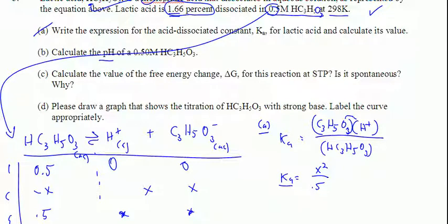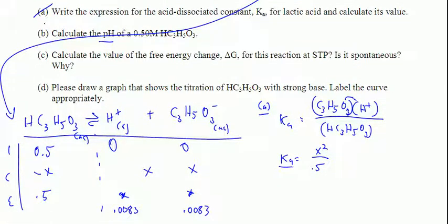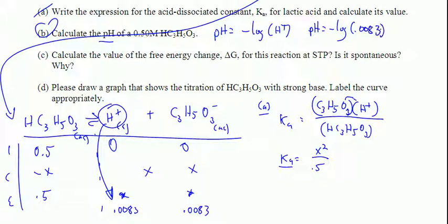Now I'm going to start the problem. Part A: Calculate the pH. pH equals negative log of H plus, therefore pH equals negative log of 0.0083 at equilibrium.